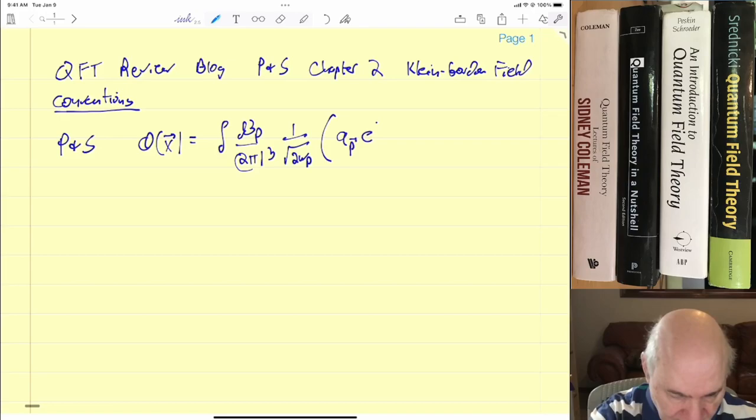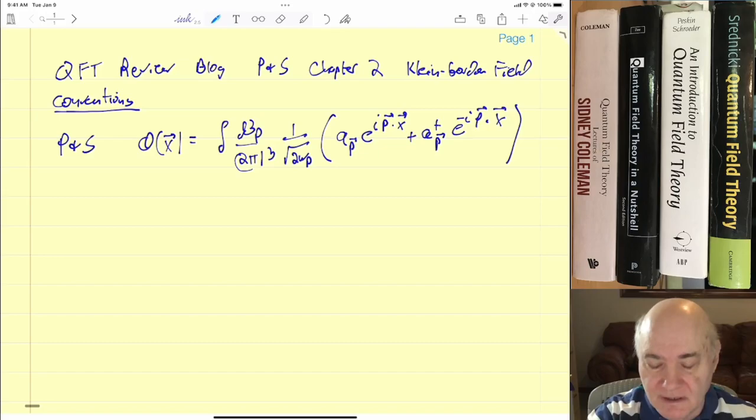They have ap e^(ip·x) plus a dagger p e^(-ip·x). I won't always put the arrows on top of the variables. So there's all these factors - the 2π cubed, the square root of 2ωp. When you look in other books you won't see that there, you might see a 2ωp. Everybody defines their creation operators differently.